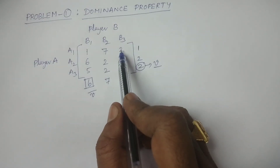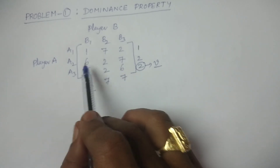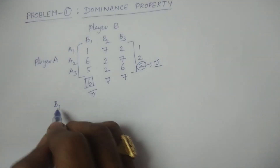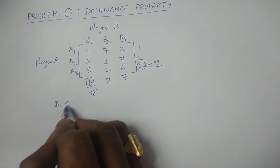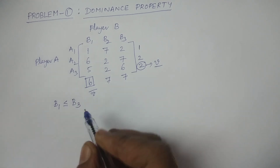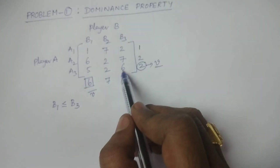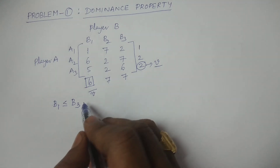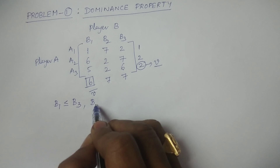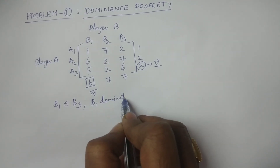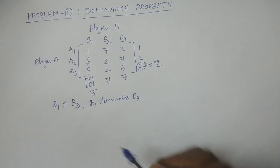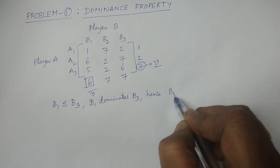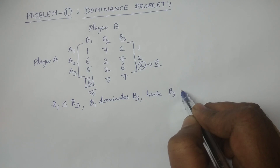Comparing B1 and B3: 2 greater than 1, 7 greater than 6, and 6 greater than 5. That is, all the elements in B1 are less than or equal to all the elements in B3 — specifically 1 less than 2, 6 less than 7, 5 less than 6. Therefore, the strategy B1 dominates the strategy B3. Hence B3 can be deleted — simply delete B3.